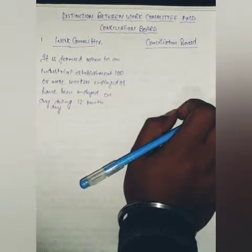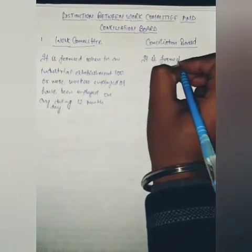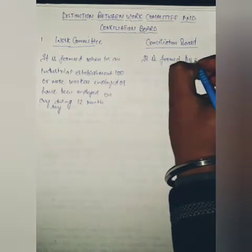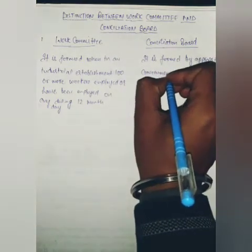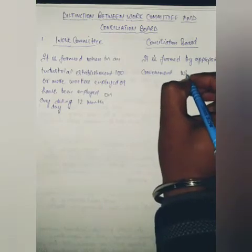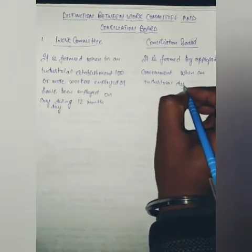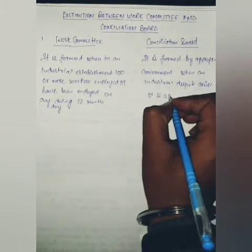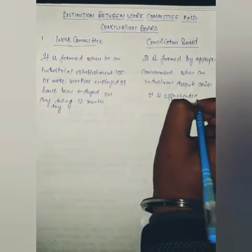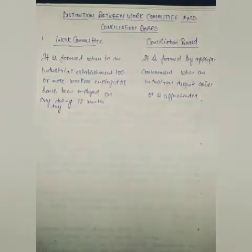A conciliation board, on the other hand, is formed by the appropriate government — whichever government is appropriate for that industry — when an industrial dispute arises or is apprehended. So, a work committee is formed to prevent industrial dispute, whereas a conciliation board is formed to settle the industrial dispute.